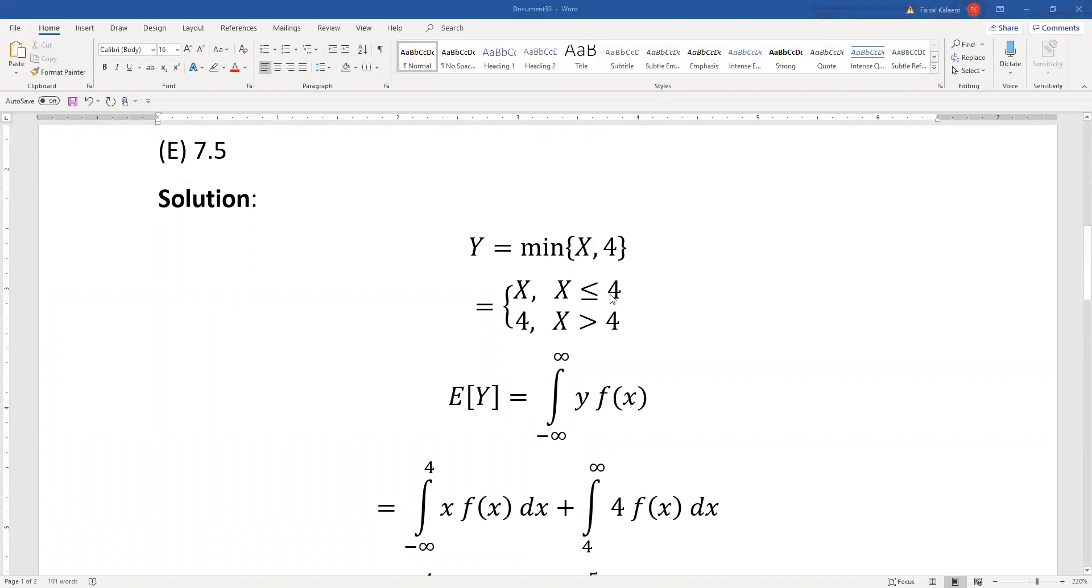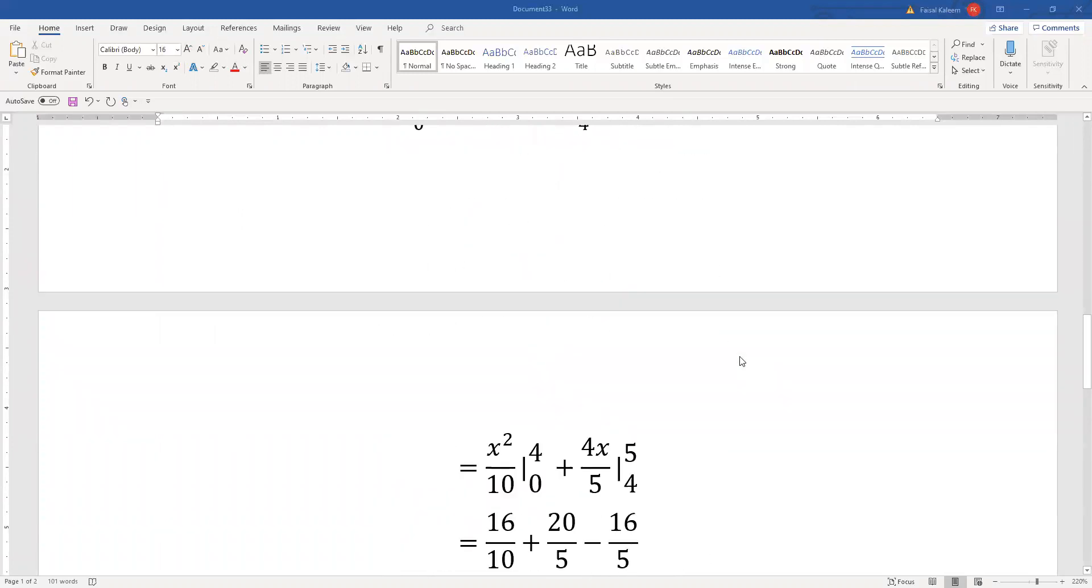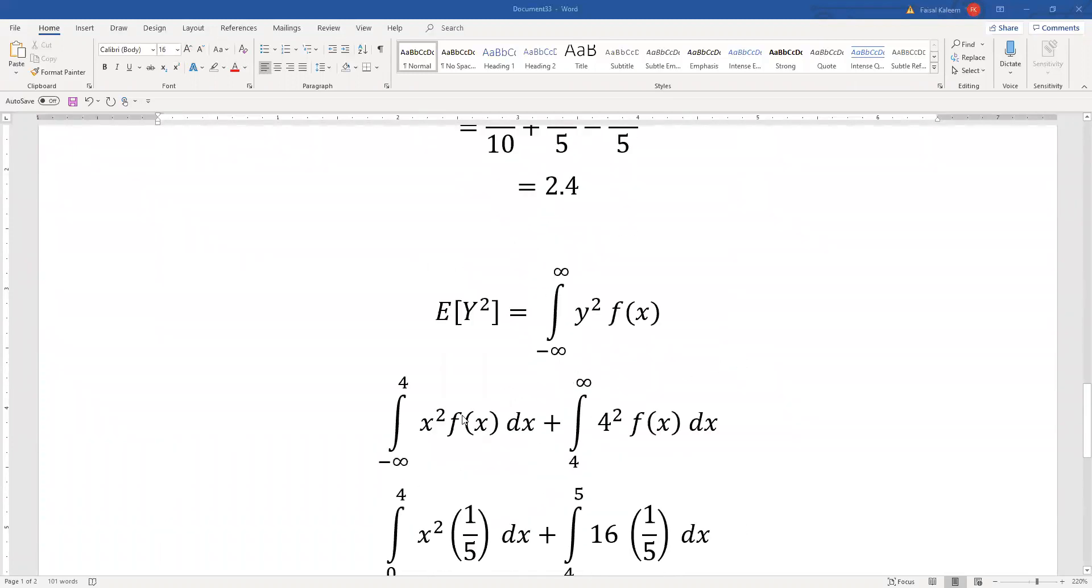From negative infinity to 4, y is x, so y squared will be x squared. And in the 4 to infinity part, y was 4, so y squared will be 4 squared.